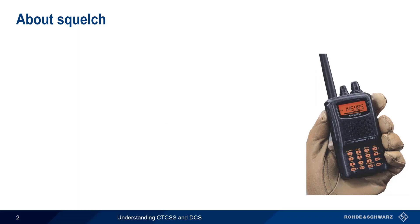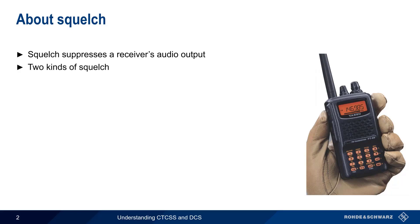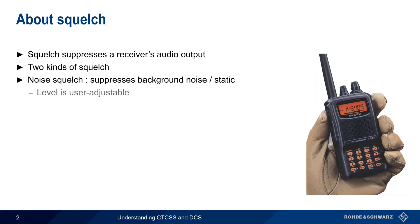Let's start by discussing squelch. We can define squelch as a technique that's used to suppress the audio output of a radio receiver. A radio with squelch enabled produces no audio output until it receives a signal that breaks squelch. There are two types of squelch. The first is noise squelch, which suppresses background noise or static. The user configures a level, and audio output remains off or squelched until the received signal level exceeds its squelch level. The main purpose of noise squelch is to prevent listener fatigue — with squelch enabled, there's no static or hissing sound coming from the radio between received transmissions.